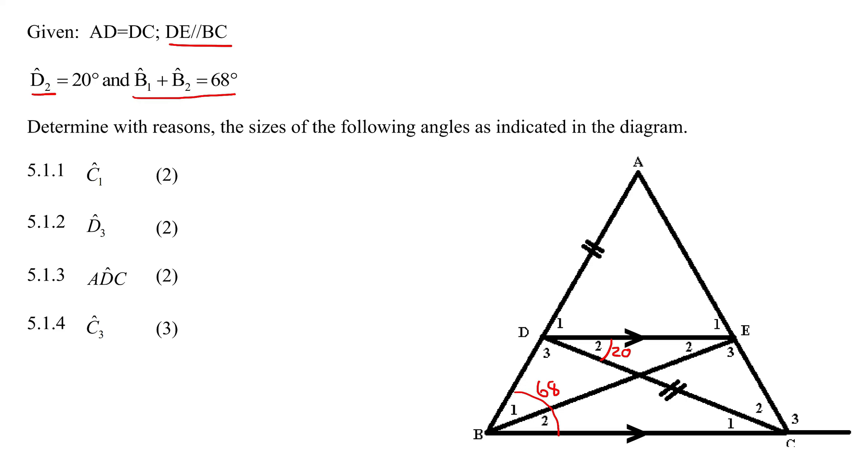First question: determine with reasons the angle C1. So here's C1. Can you see that there's the parallel lines? So there we've got alternating angles. So we could say that C1 is equal to 20 degrees because of alternate angles, and that is because the line DE is parallel to BC.